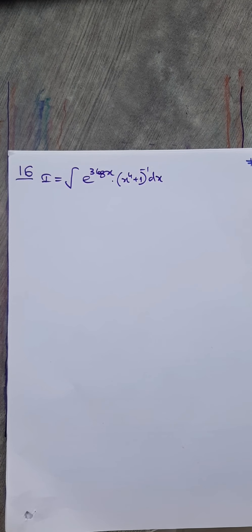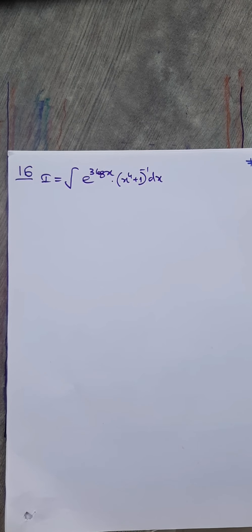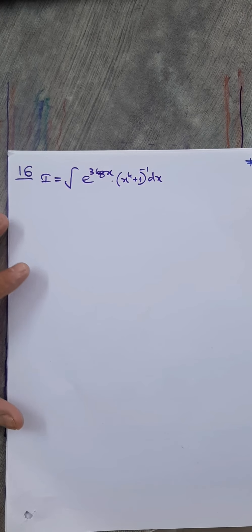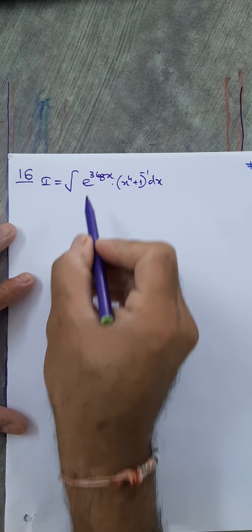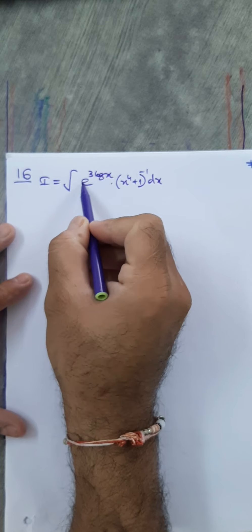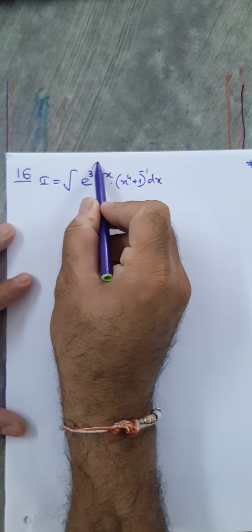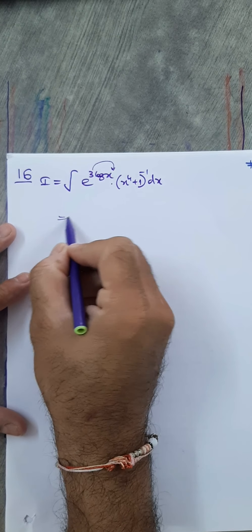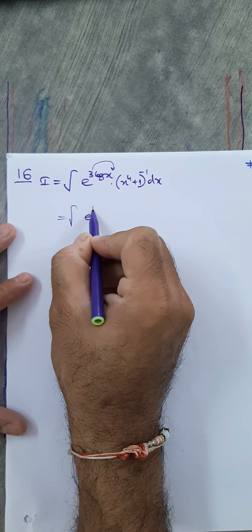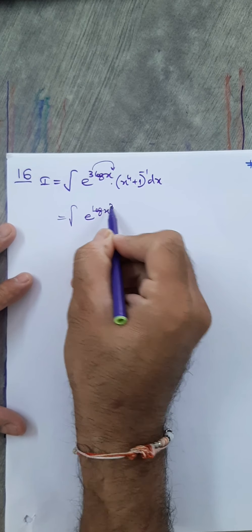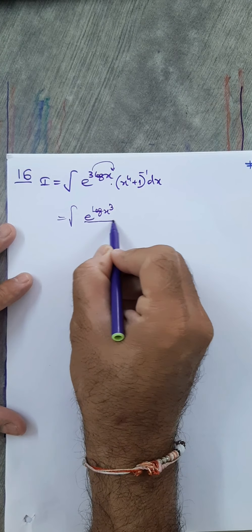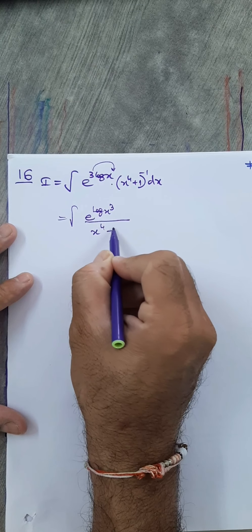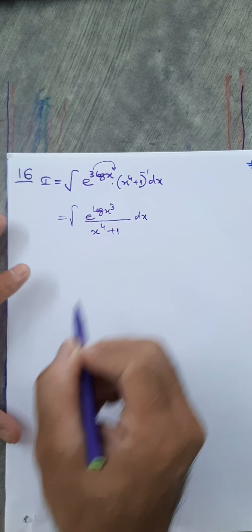Question number 16: integral of e raised to 3 log x into (x raised to 4 plus 1) the whole raised to minus 1. Using the property of exponential and log, this becomes e raised to log x cube, and the (x⁴+1) term goes to the denominator, so we have x cube upon x raised to 4 plus 1, dx.